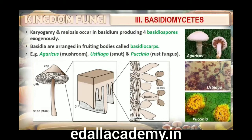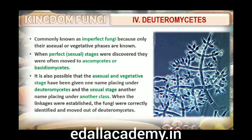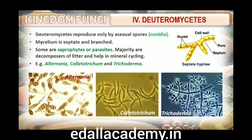Fourth are deuteromycetes, commonly known as imperfect fungi because only the asexual or vegetative phases of these fungi are known. When the sexual forms were discovered they were moved into classes they rightly belong to. It is also possible that the asexual and vegetative stage have been given one name and placed under deuteromycetes, and the sexual stage another name and placed under another class. Once perfect (sexual) stages of members of deuteromycetes were discovered, they were often moved to ascomycetes and basidiomycetes. Deuteromycetes reproduce only by asexual spores known as conidia. The mycelium is septate and branched. Some members are saprophytes or parasites, while a large number are decomposers of litter and help in mineral cycling. Some examples are Alternaria, Colletotrichum and Trichoderma.